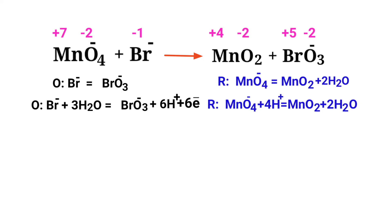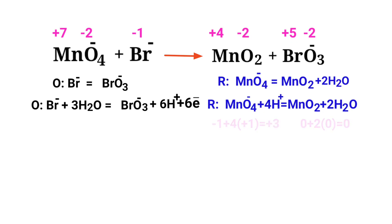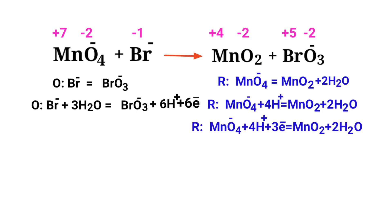Now balance the charges in the reduction half reaction. Both sides are not equal, so add 3 electrons to the left side to make it equal to 0. The addition of charges is now equaled in the reduction half reaction.